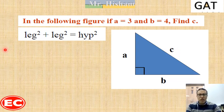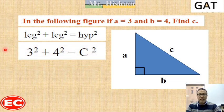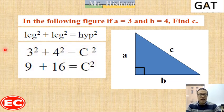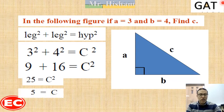So 3 squared plus 4 squared is equal to C squared. 3 squared is 9, 4 squared is 16. 9 plus 16 is equal to 25, so C squared equals 25. But we are looking for the value of C, not C squared, so by taking the square root of both sides, the value of C is equal to 5.